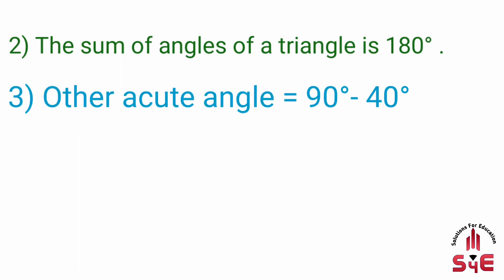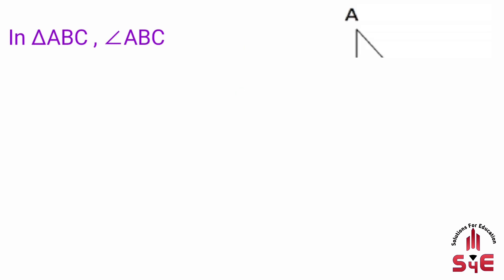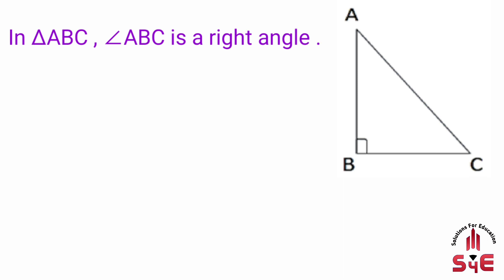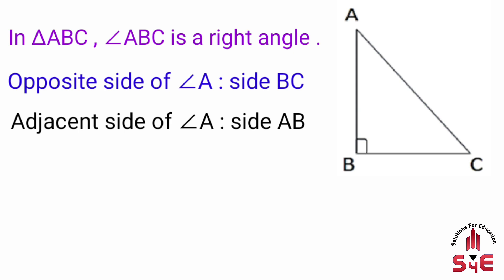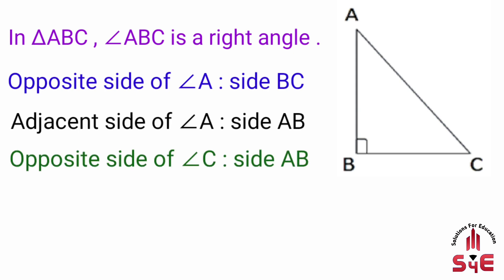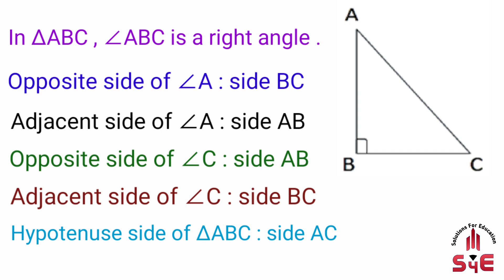Solution of fourth question: the side is called the hypotenuse. In triangle ABC, angle ABC is a right angle. The opposite side of angle A is side BC; the adjacent side of angle A is side AB; the opposite side of angle C is side AB; the adjacent side of angle C is side BC; and the hypotenuse of triangle ABC is side AC. Triangle ABC mein angle ABC ek right angle hai, isliye triangle ABC ek right-angled triangle hua.